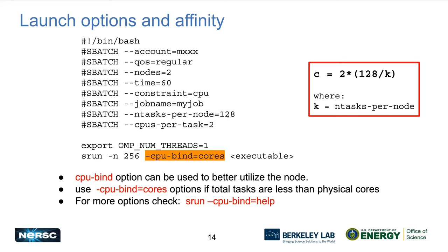When launching jobs, it's important to talk about affinity — how your processes and threads are bound to hardware threads and cores. It's recommended that one MPI process is bound to a hardware core. You can set this with the option --cpu-bind=cores in your launcher command. There are other options to explore using --cpu-bind=help. Also make sure that you're setting CPUs per task appropriately using the equation, where for the GPU node it would be 64 instead of 128.